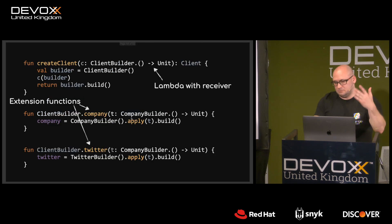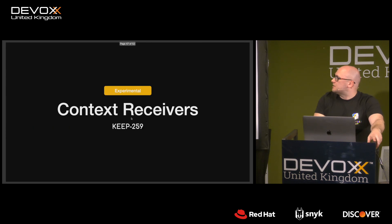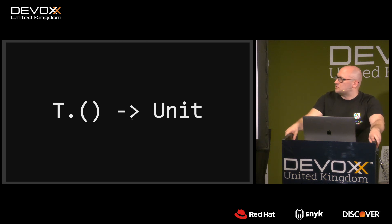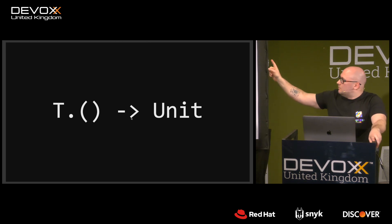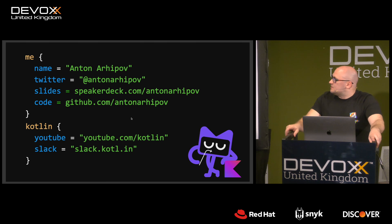Today you learned about extension functions, infix notation, and experimental features like context receivers. The one thing to remember from this talk: functions, properties, and functional literals can be extensions for types in Kotlin — this is the most important language feature for building APIs or DSLs like this. If you want the slides, they are on Speaker Deck; the source code is on GitHub; and if you want to learn more about Kotlin, we have a channel on YouTube — please subscribe and like.